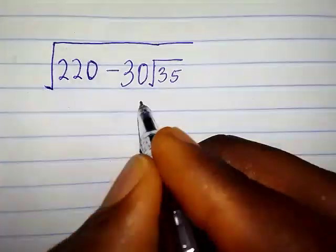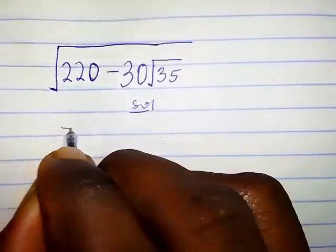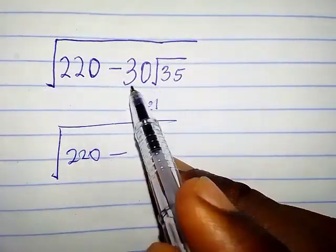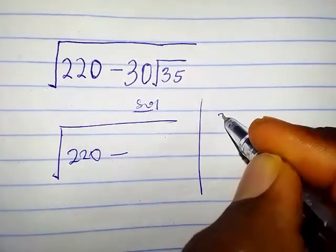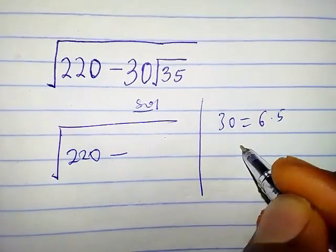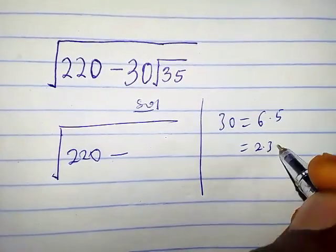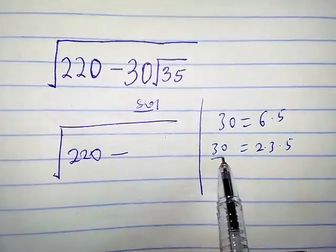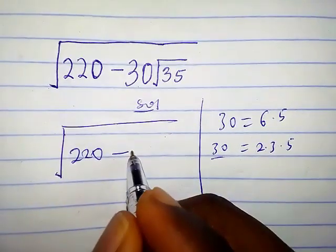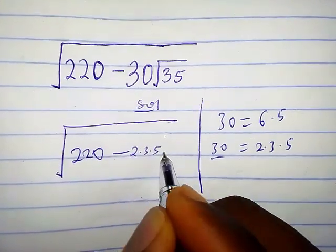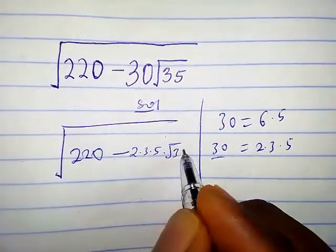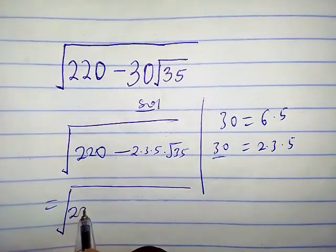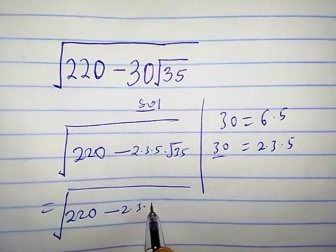How do we solve this kind of problem? We have square root of 220 minus 30 times square root of 35. We can write 30 as 6 times 5, which can also be written as 2 times 3 times 5. So now we replace 30 with 2 times 3 times 5, giving us square root of 220 minus 2 times 3 times 5 times square root of 35.